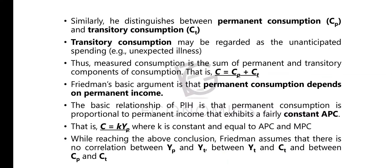Similarly, Friedman distinguishes between permanent consumption and transitory consumption — just as he divided income into permanent and transitory, he also distinguishes consumption into these two components.